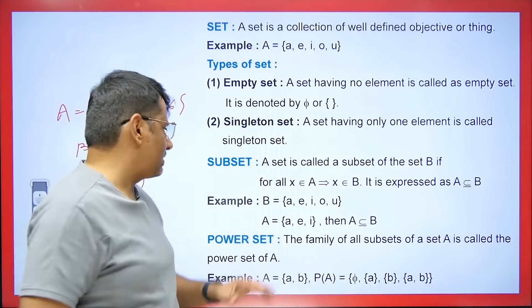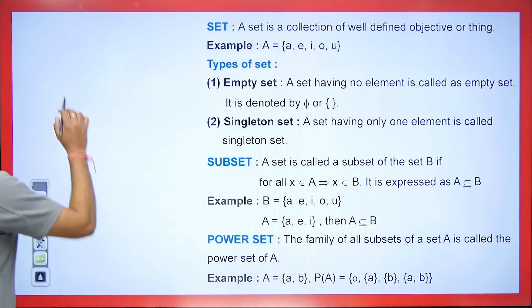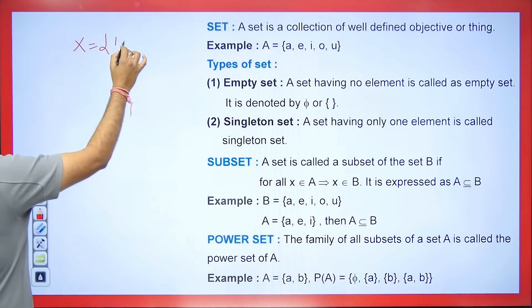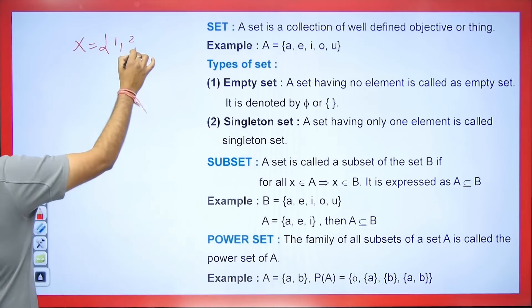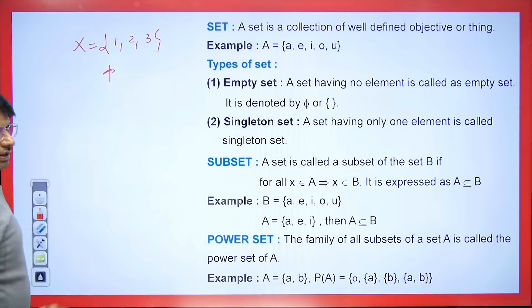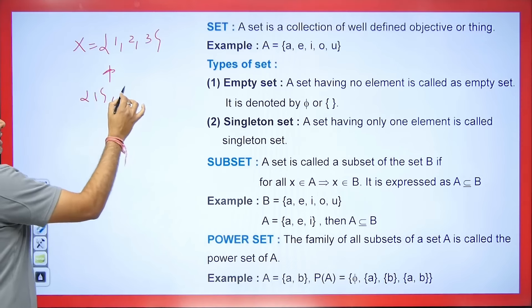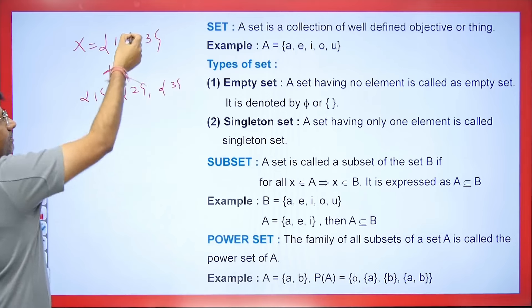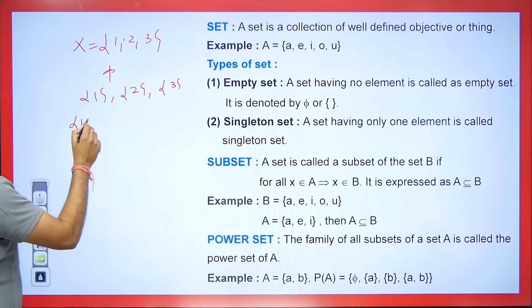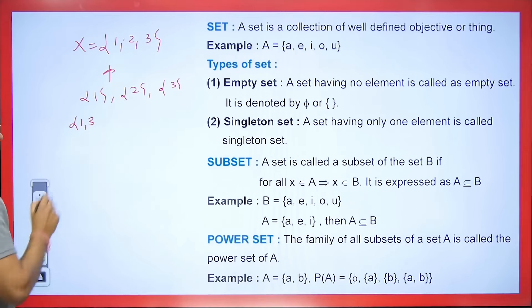Now what is the power set? The family of all subsets of set A is called the power set of A. Let's say we have set X = {1, 2, 3}. The subsets of this set are: the empty set, {1}, {2}, {3}, {1,2}, {1,3}, {2,3}, and {1,2,3}. Counting them: 1, 2, 3, 4, 5, 6, 7, 8 — so in total we have 8 subsets.